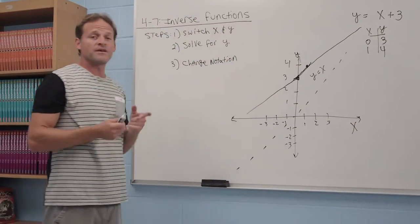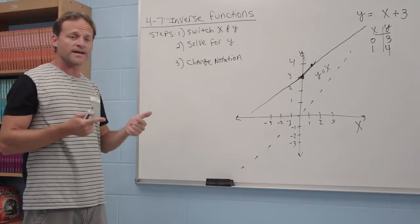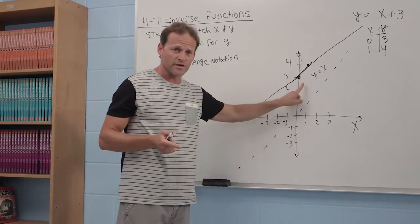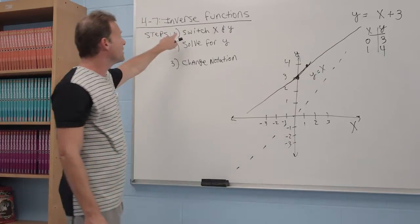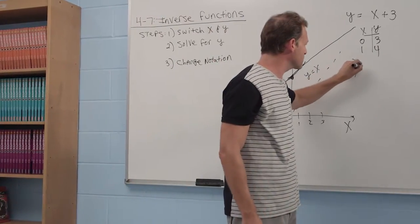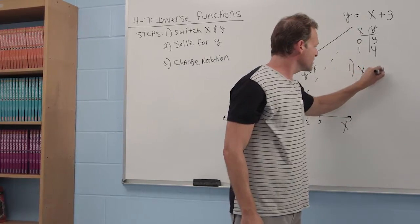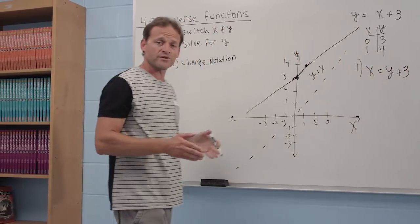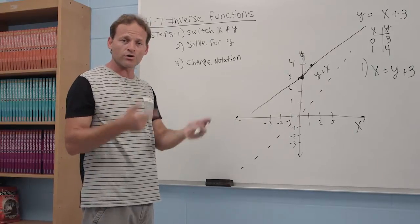So how do we find the inverse? Once we do, we can plot it and see that this is the reflection of this. Step number one, switch x and y. That's it. All you got to do is switch the x and y, which is really the essential feature of an inverse. All the x's and y values are switched.